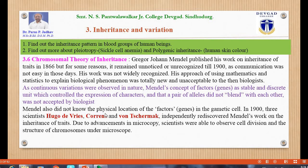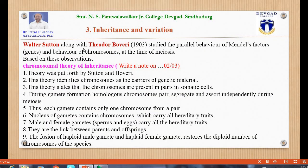Mendel also did not know the physical location of the factor or gene in the gamete. In 1900, three scientists — Hugo De Vries, Correns, and Von Tschermak — independently rediscovered Mendel's work on the inheritance of traits. Due to advancement in microscopy, scientists were able to observe cell division and chromosome structure. Walter Sutton along with Theodore Boveri in 1900 studied the parallel behavior of Mendel's factors or genes and the behavior of chromosomes during meiosis.